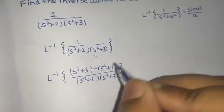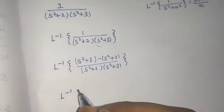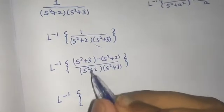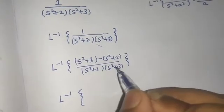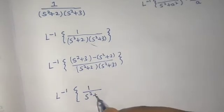So we can easily separate it now and write this as Laplace inverse of each term divided by the denominator. So s²+3 will cancel, leaving 1 over (s²+2).